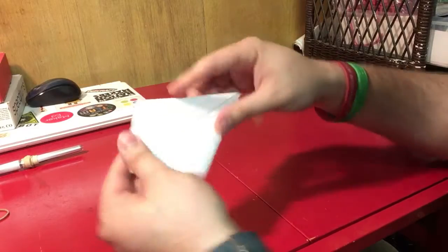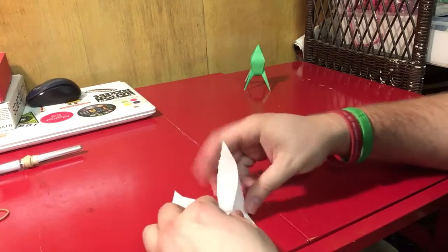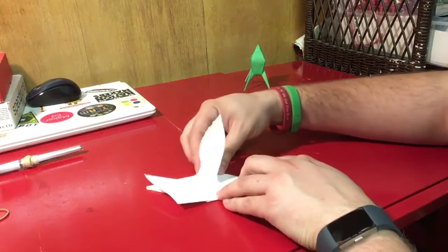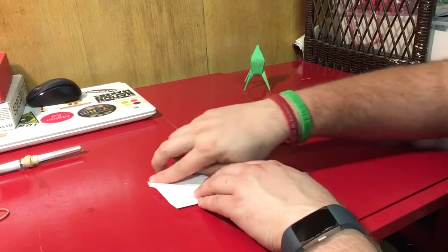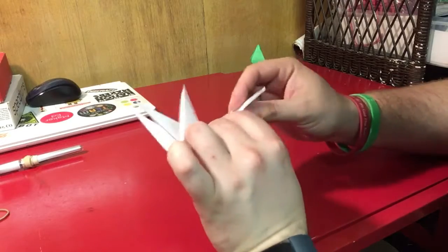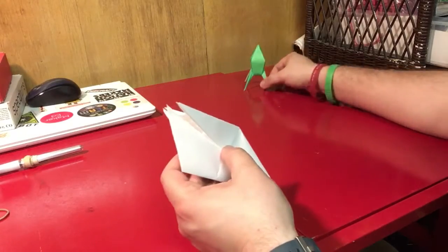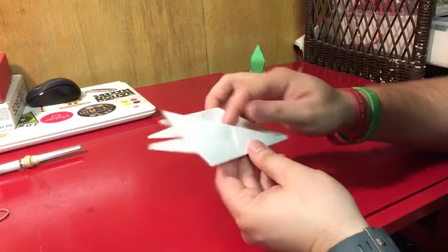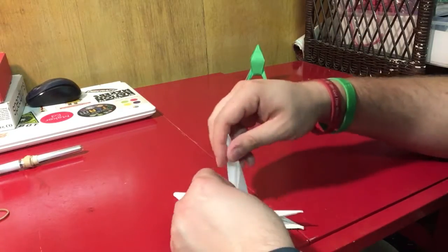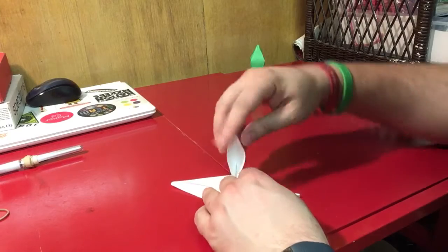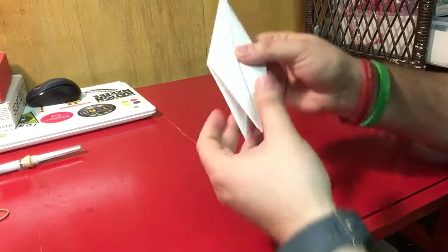Unfold a bit and fold those folds together, bringing the edges together so it comes to a point. Fold it down. The crisper and more even your folds, the crisper your rocket ship legs will be. Do the same to this side: fold those together, line up the edges to create a point, and fold down.